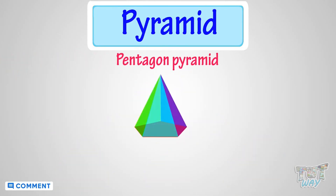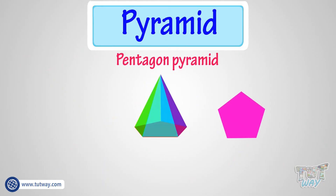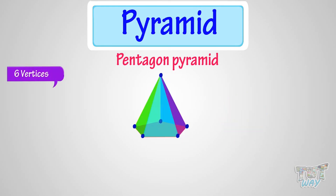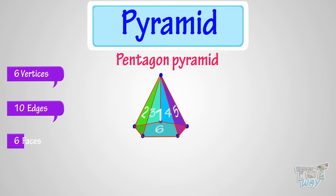This is a pentagonal pyramid, because its base is a pentagon, and all other faces are triangle, and converge to a single point. It has 6 vertices, 10 edges, and 6 faces.